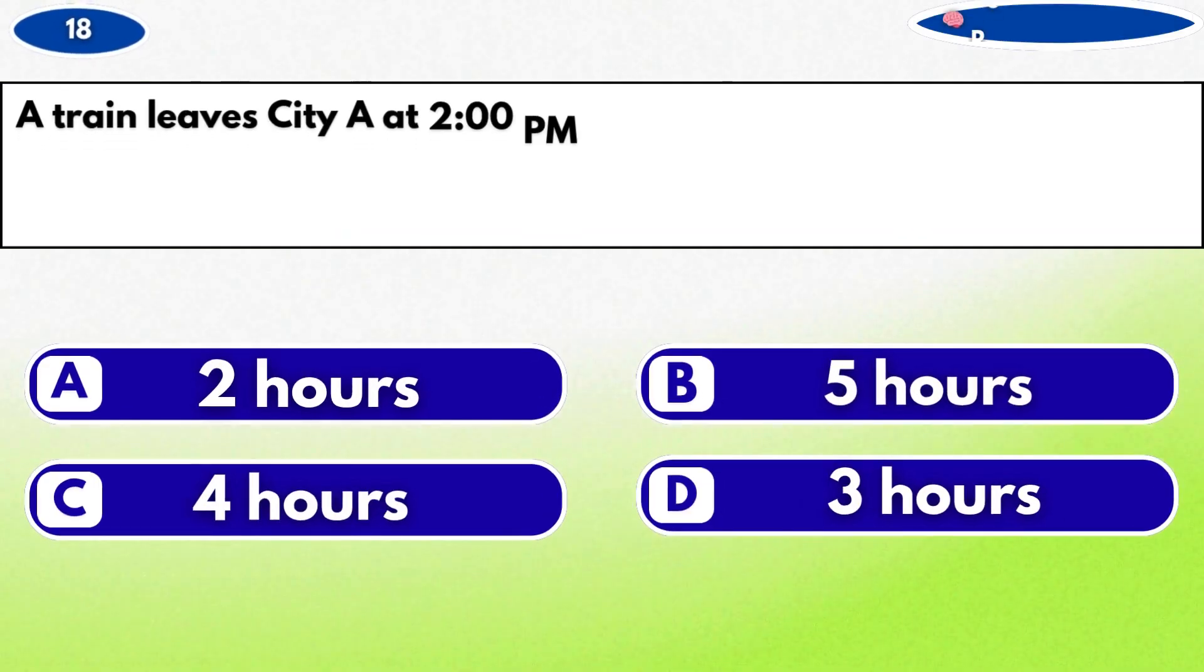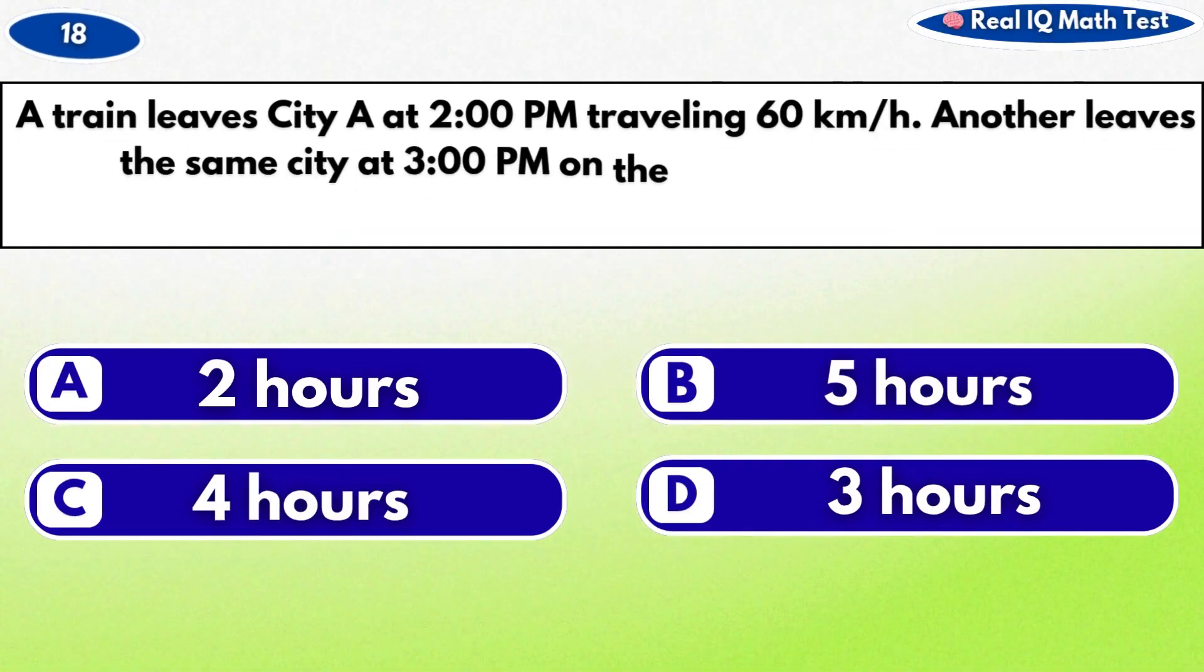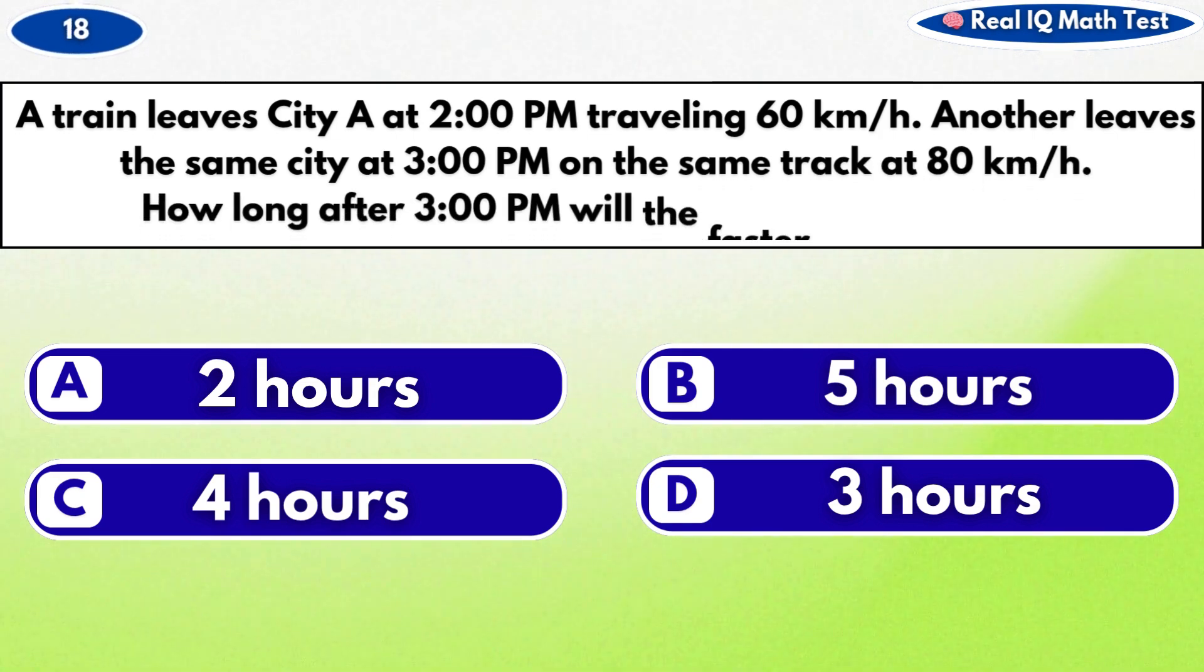A train leaves city A at 2 p.m. traveling 60 kilometers per hour. Another leaves the same city at 3 p.m. on the same track at 80 kilometers per hour. How long after 3 p.m. will the faster train catch up?